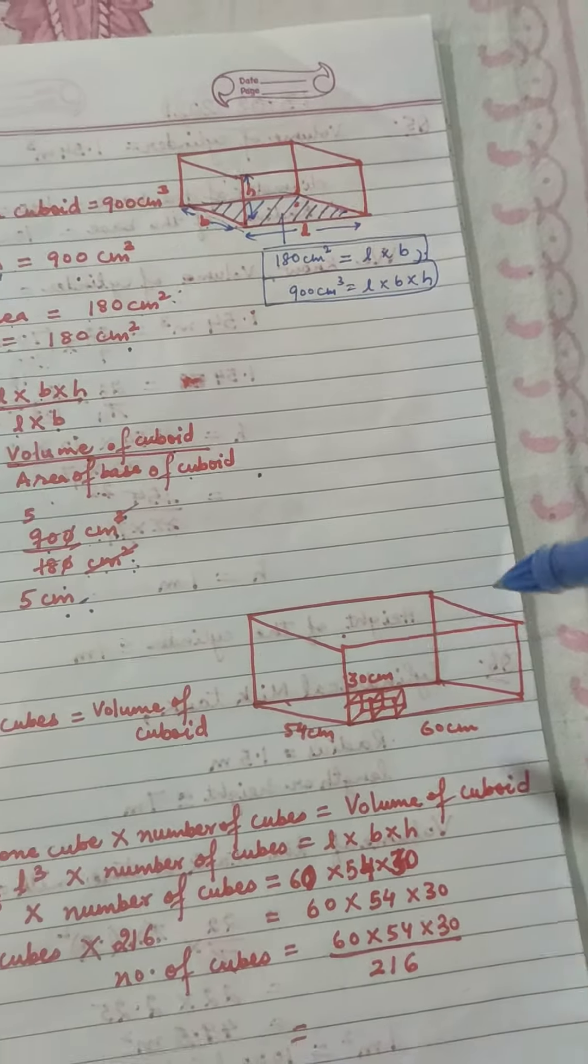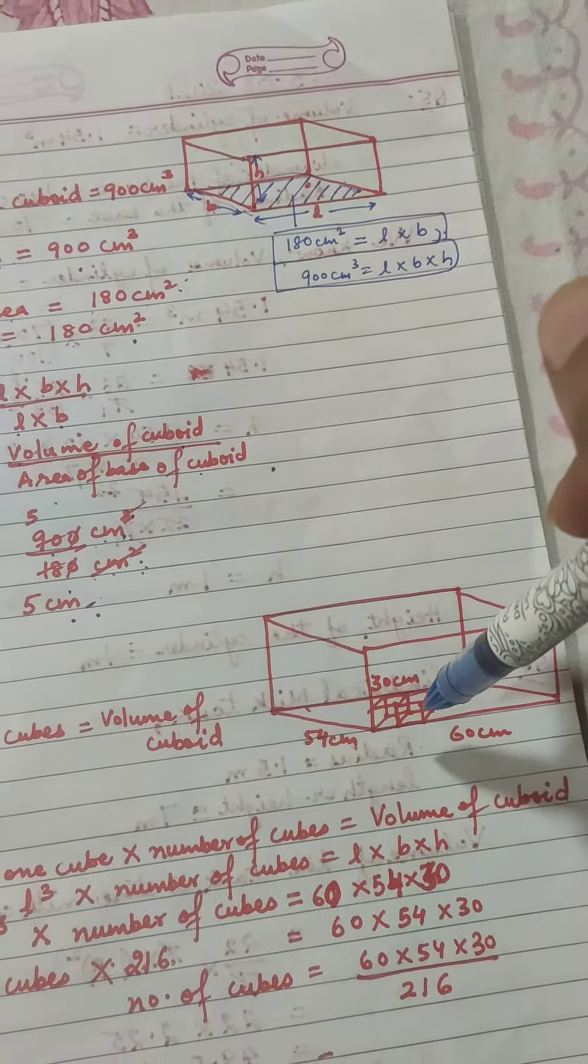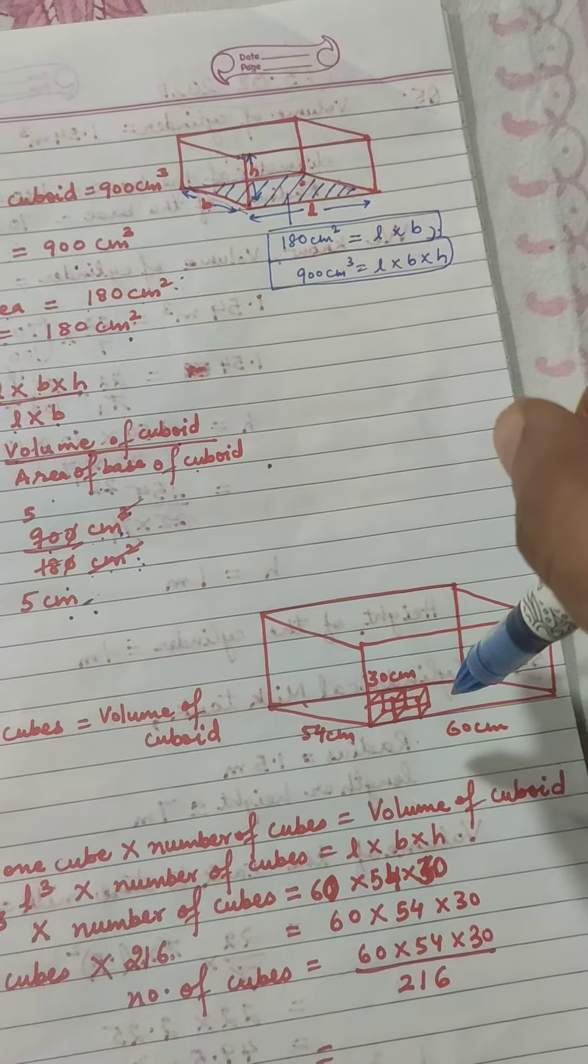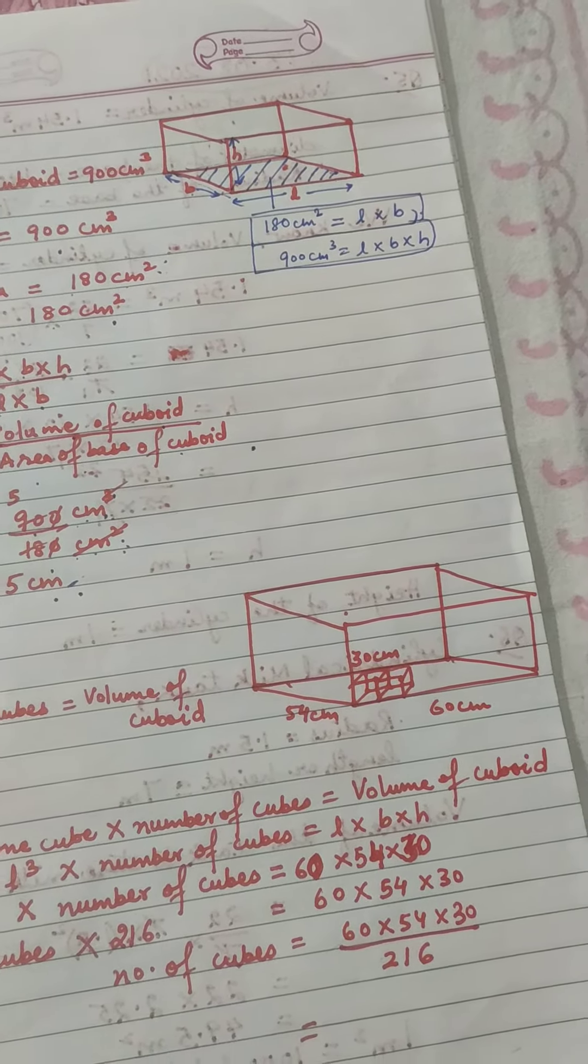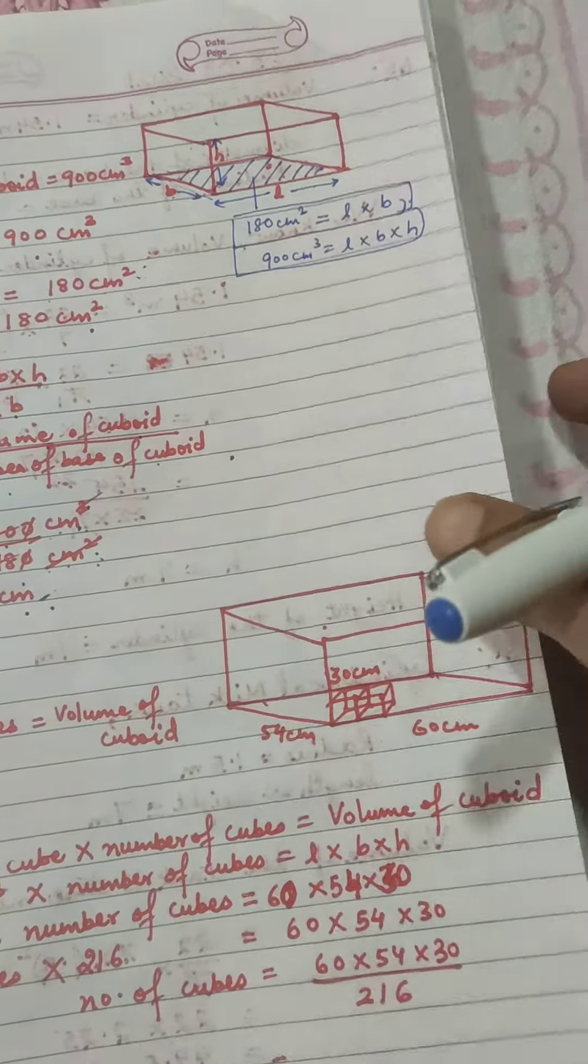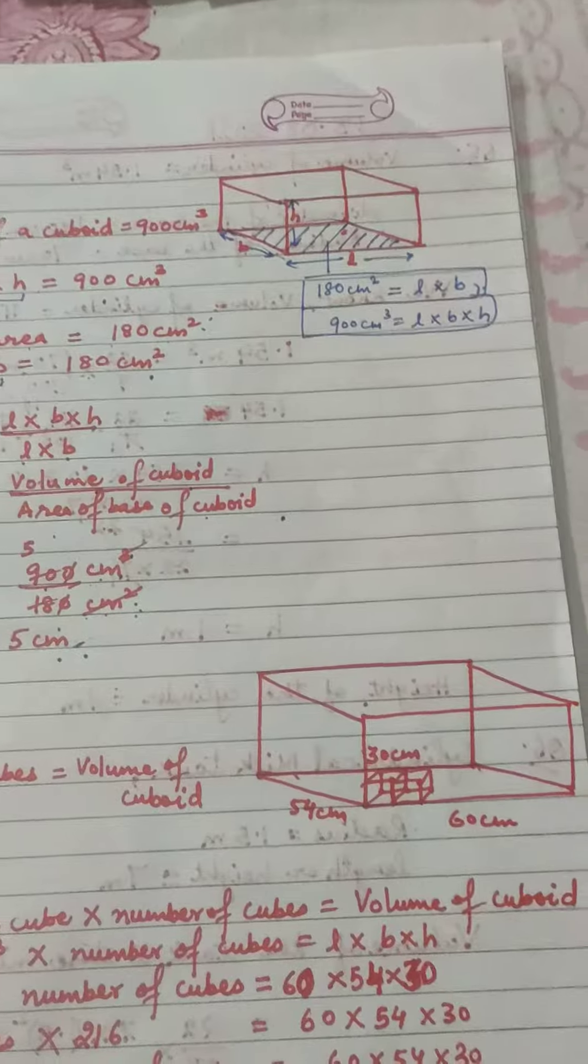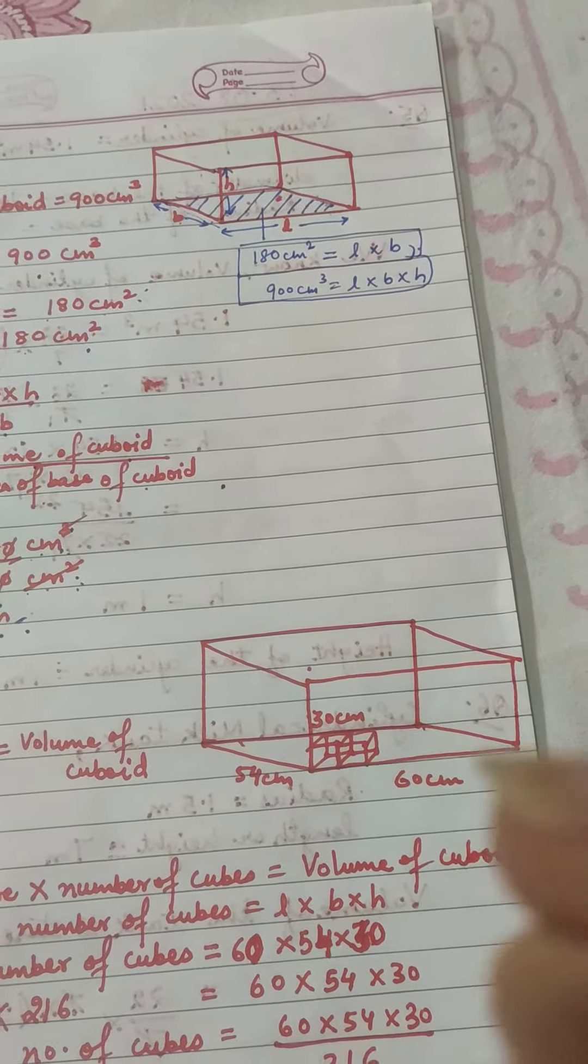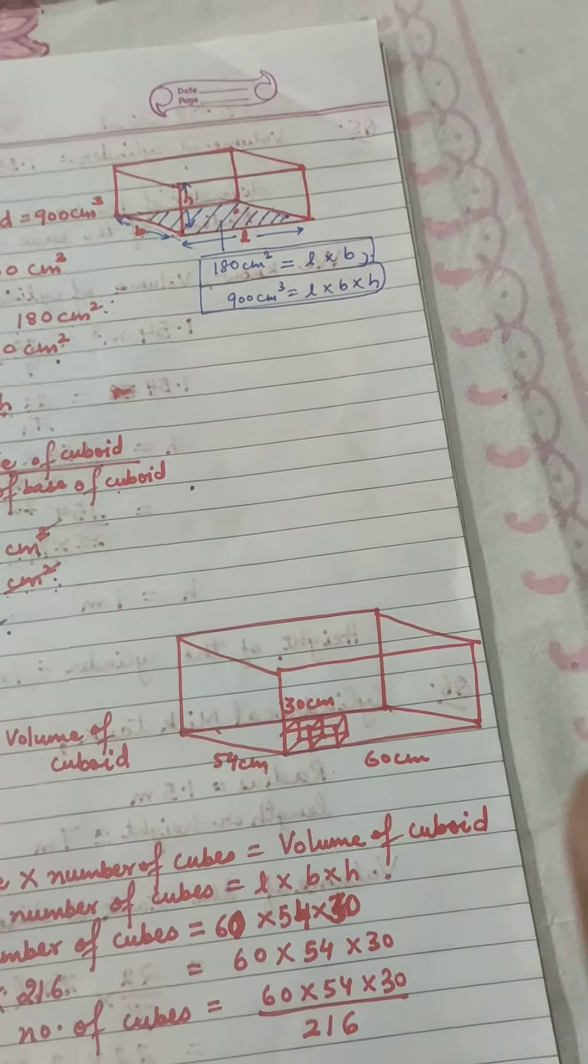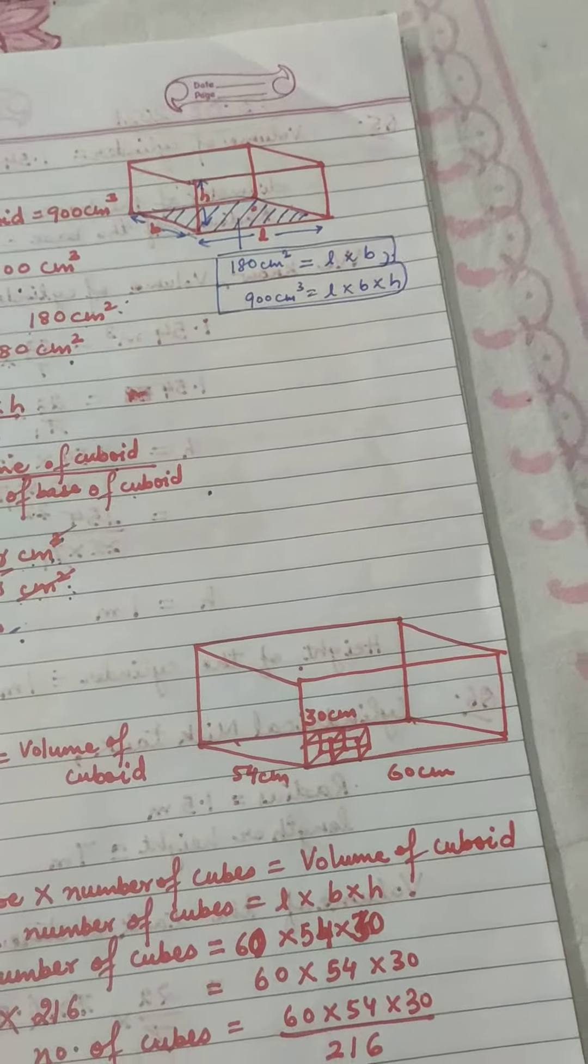And it asks how many small cubes can fit inside it, where each cube has one side of 6 centimeters. Whenever you get such a question, whether it's cylinder or cube, cuboid or cube, or anything like this, remember one thing: